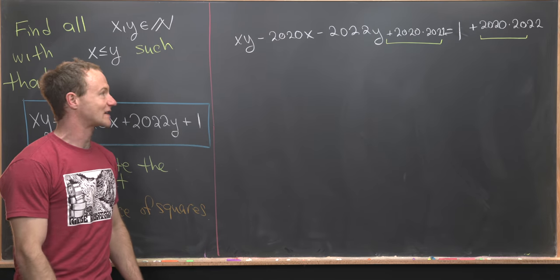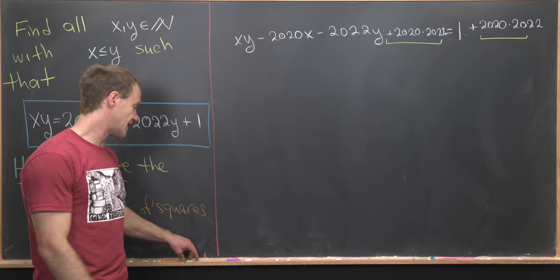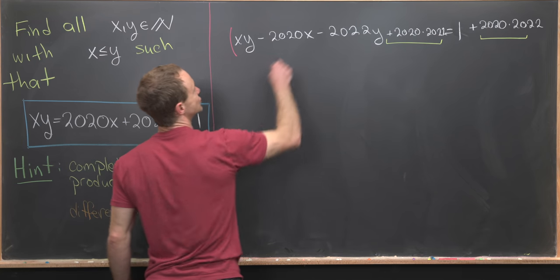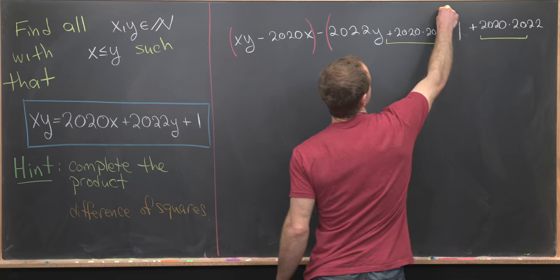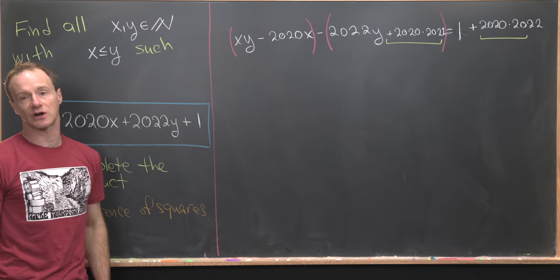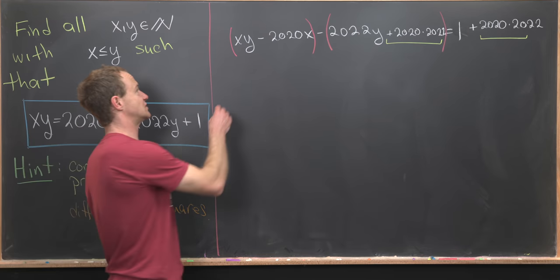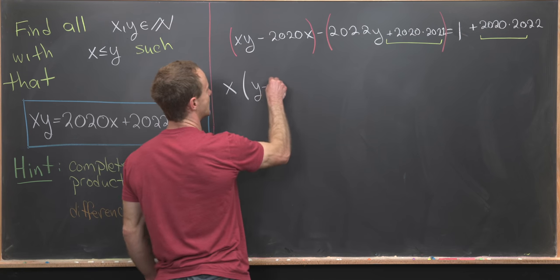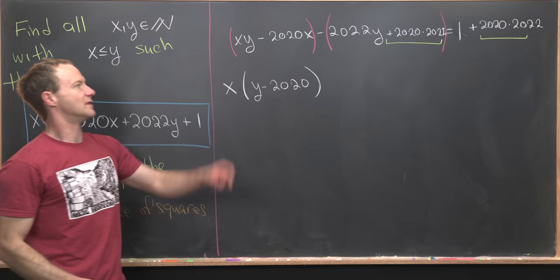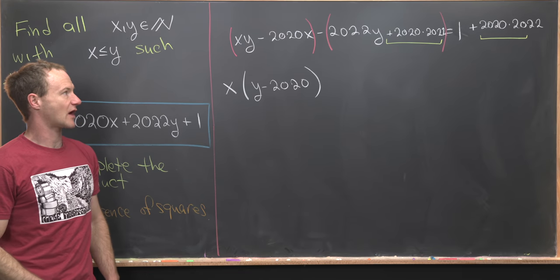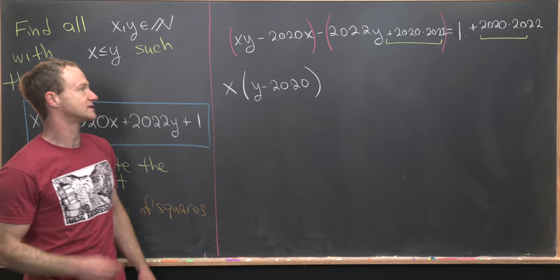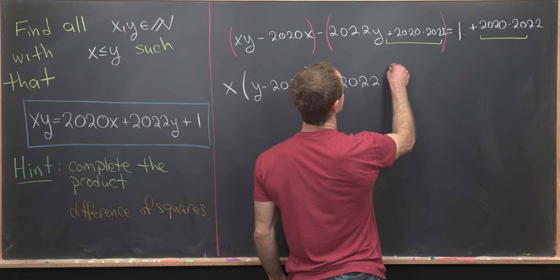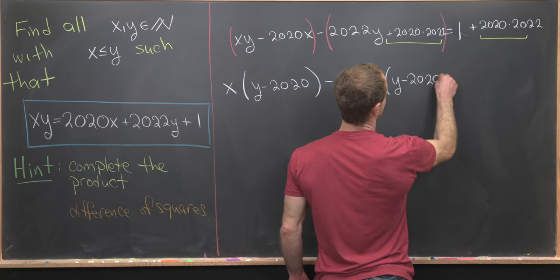Now we can do some factoring via grouping over here on the left-hand side. So let's maybe group these first two terms and then these last two terms. From the first two terms, we'll factor out a greatest common factor, which is an x. That'll give us x(y - 2020). From the last two terms, we'll factor out a -2022. So that'll give us -2022(y - 2020).